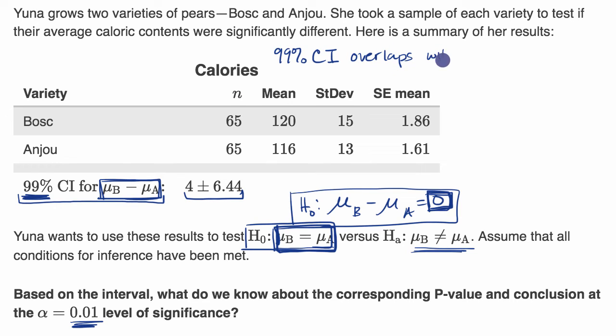overlaps with mu from the Bosc pears minus the mean caloric content of the Anjou pears equaling zero, then that means that the p-value is greater than 0.01. And so we could also say that our p-value is greater than our significance level, because that is our significance level. And because of that, we fail to reject our null hypothesis.